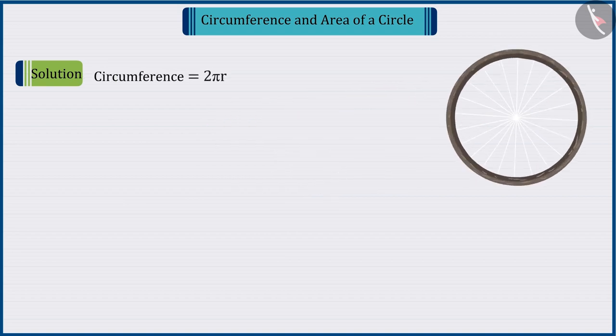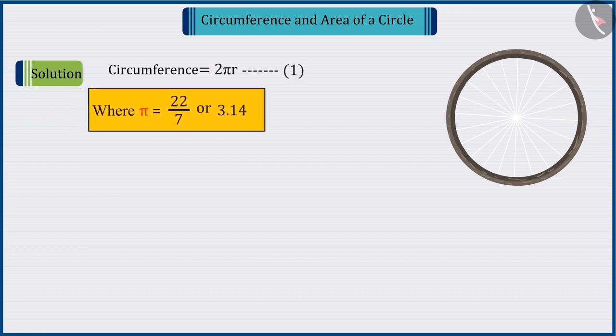Since we know that the circumference is equal to 2 pi r, where value of pi is 22 upon 7, r is the radius. But here, the value of r is unknown. So, let's find the value of r.